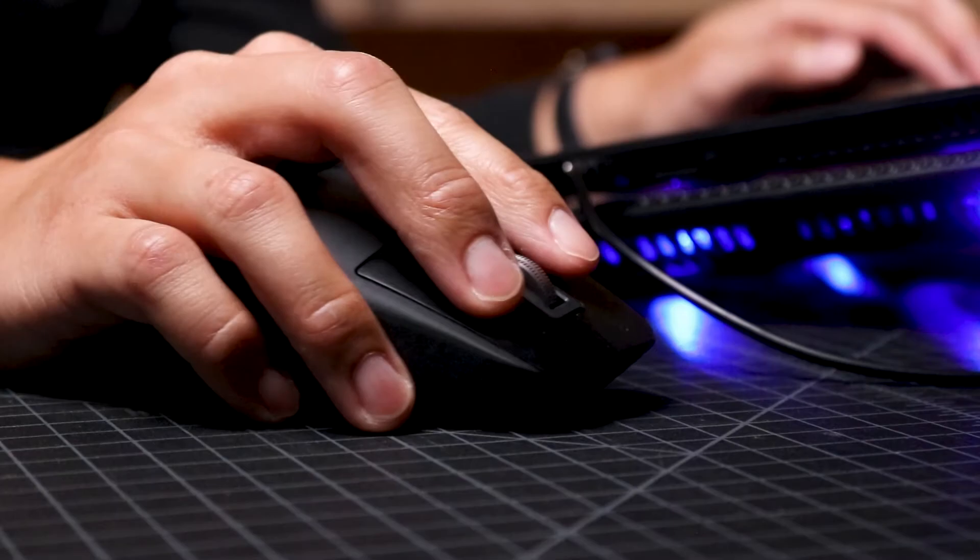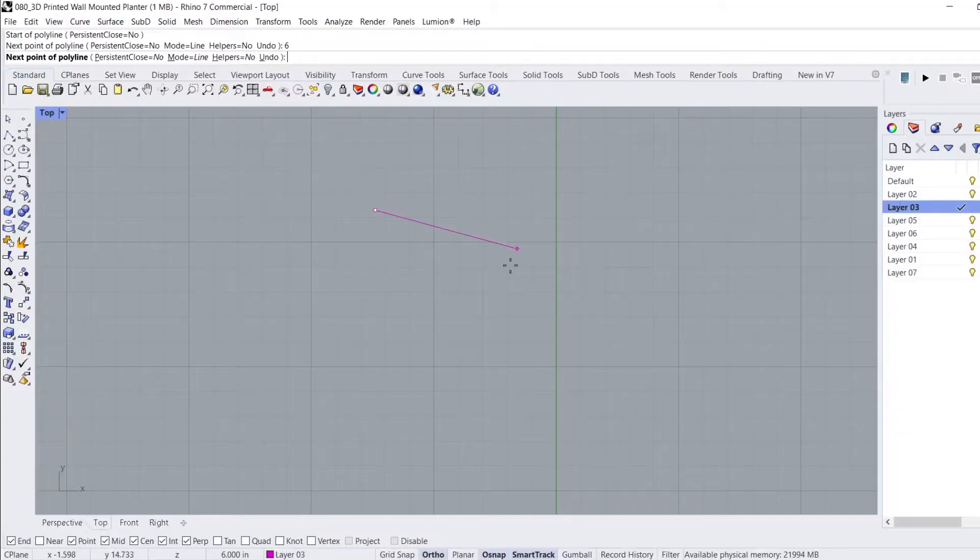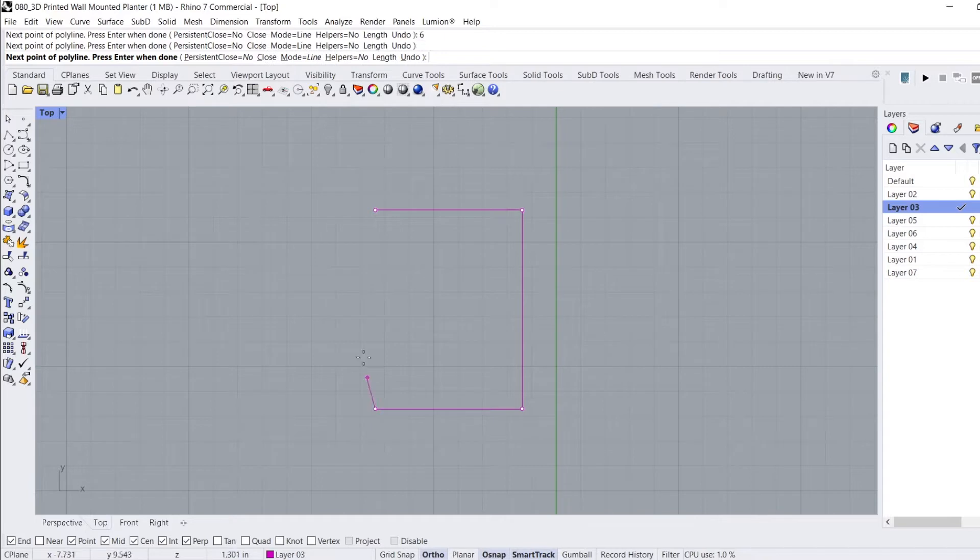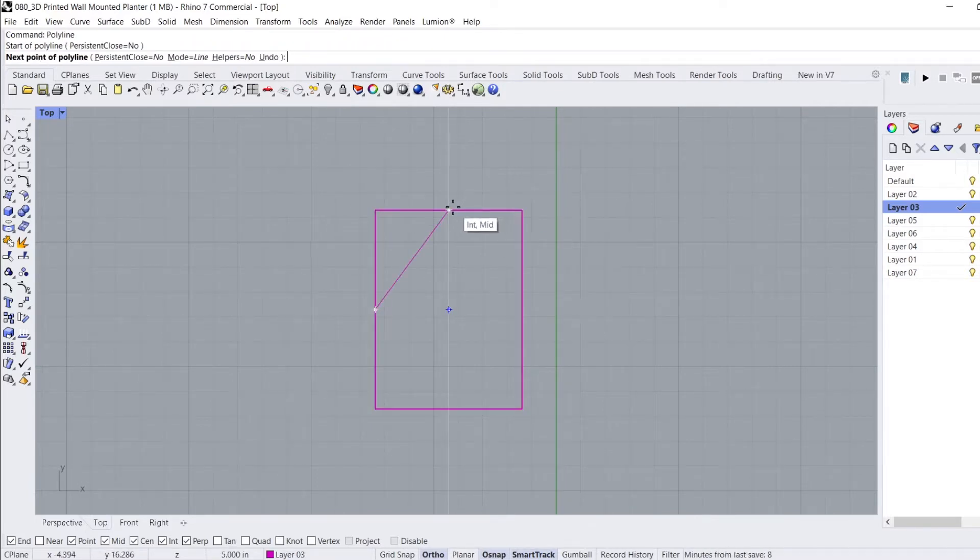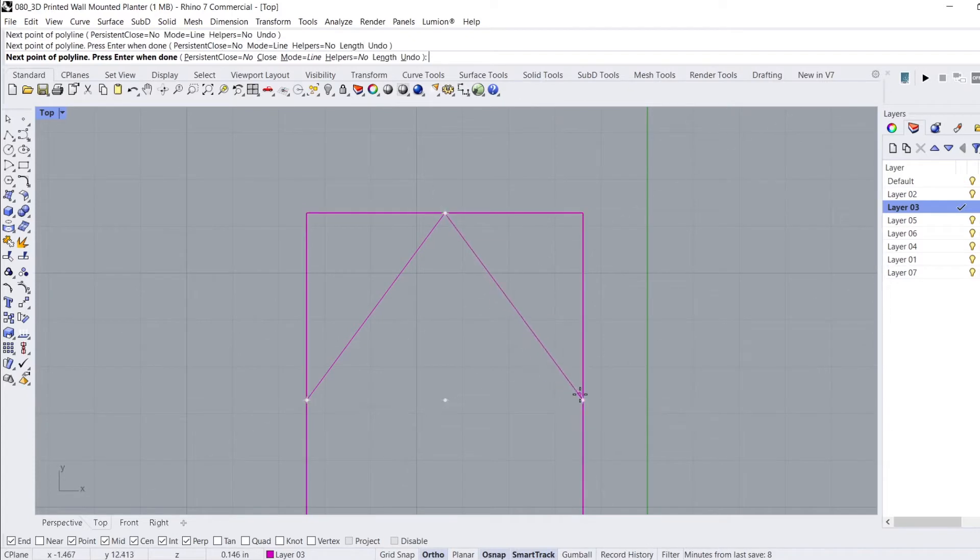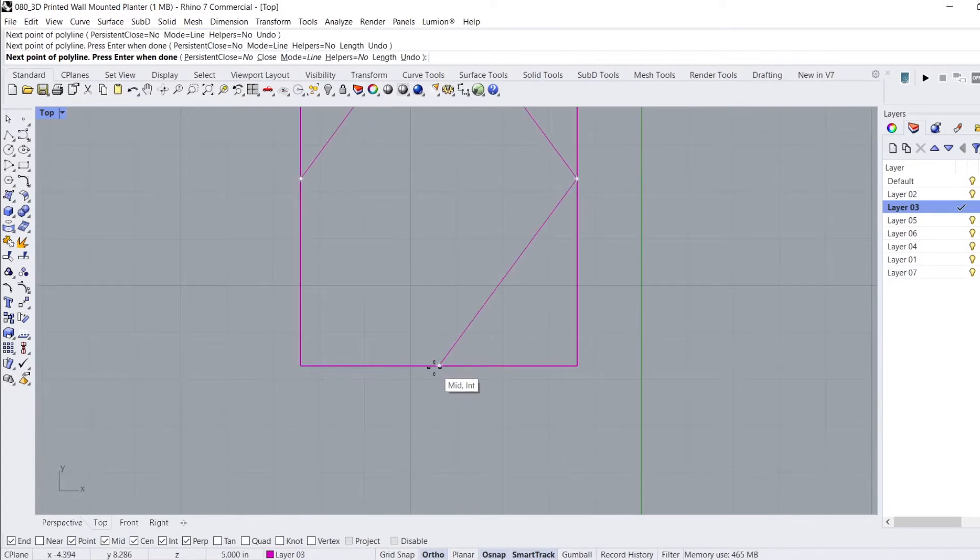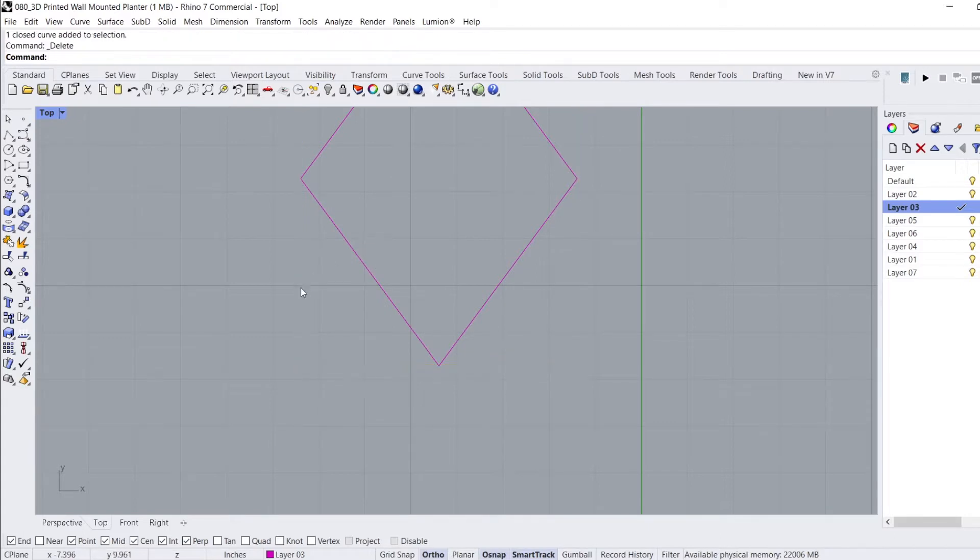With the rough idea sketched out, I set up my laptop, load up Rhinoceros, and begin designing a 3D model of the product. I start by using the Polyline command to draw a rectangle as a guide for the diamond. Using the Polyline command again, I connect a line from all the center points of each line and end up with the overall shape of the backer plate.